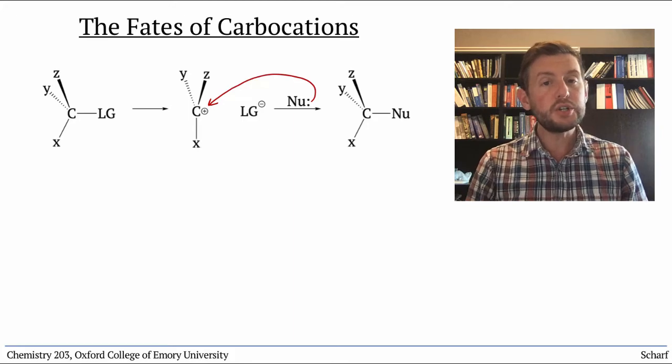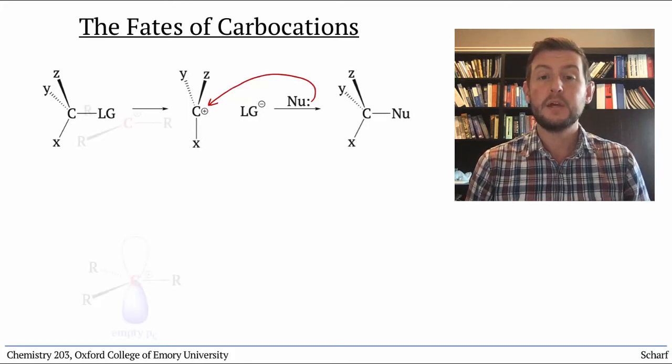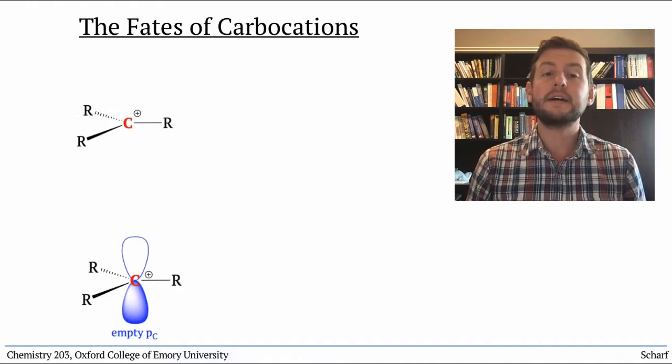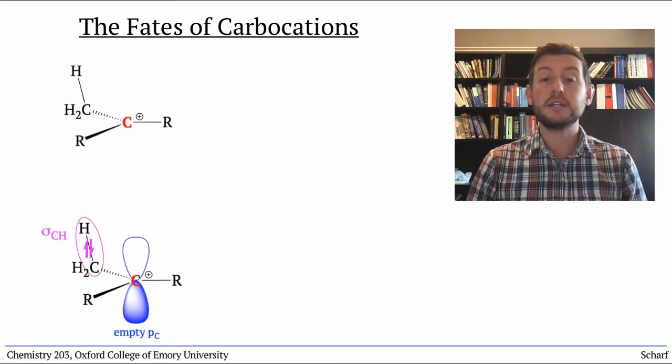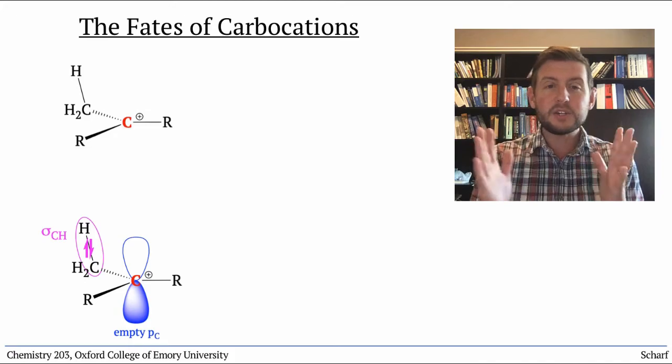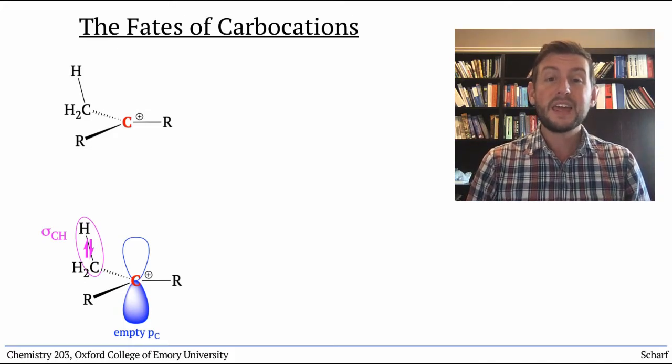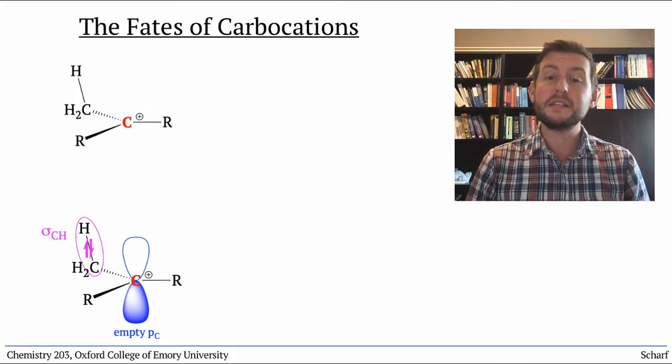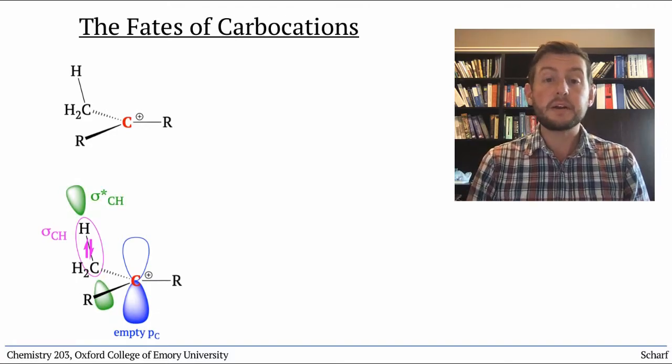But substitution isn't the only possible fate of a carbocation. Remember, carbocations have empty p orbitals which are stabilized by hyperconjugation from adjacent sigma bonding orbitals. While this hyperconjugation stabilizes the empty p orbital, it weakens the sigma bonds that are donating.